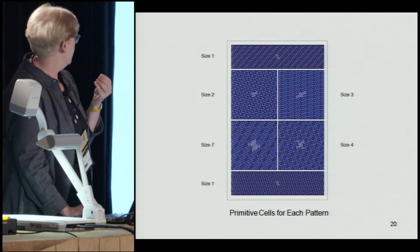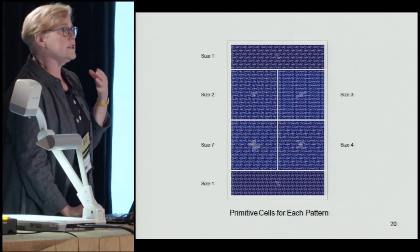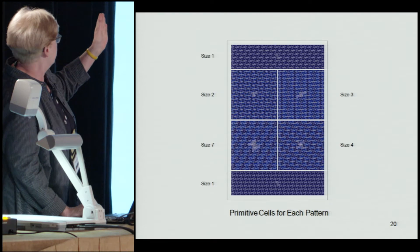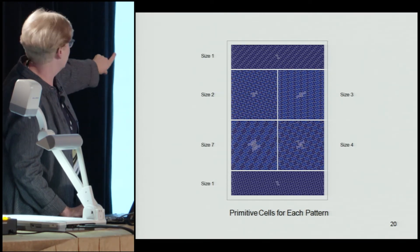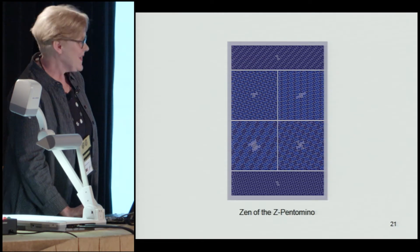It gives you a little more information and illustrates the size or complexity of each pattern, going from a primitive cell of one Z in the lower left to seven Z's in the lower right.